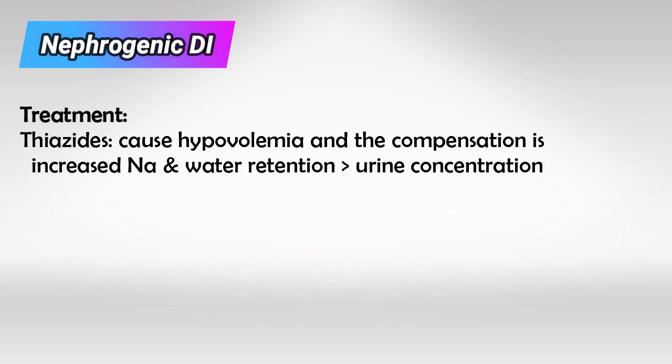The treatment of the nephrogenic type is a little bit tricky, so I'll explain each medication as we go so you can memorize them better. Thiazides are used because even though they are diuretics, they cause concentrated urine.